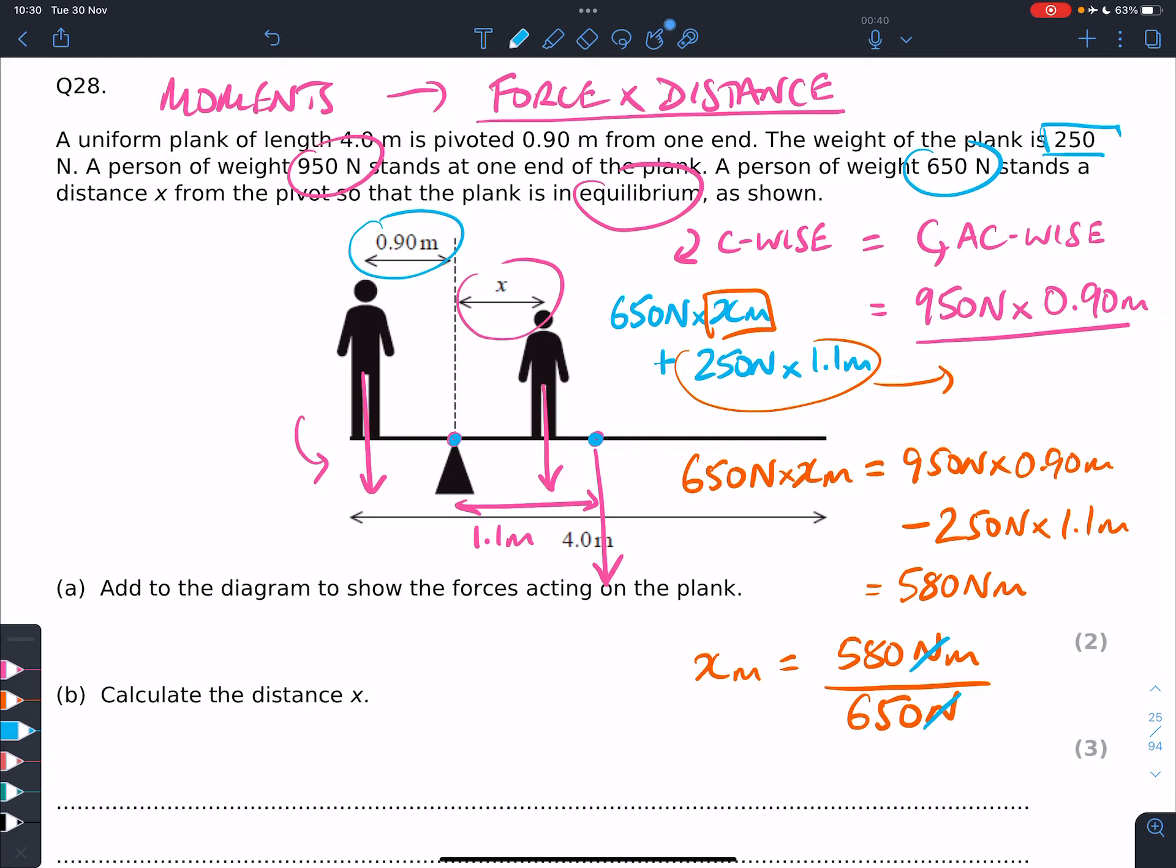And we do the divide by 650, and we get x is equal to 0.89 metres. So the distance x, x equals 0.89 metres.